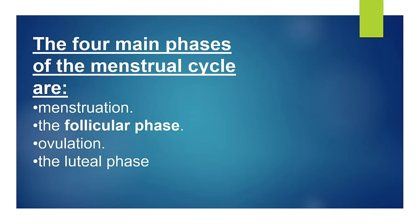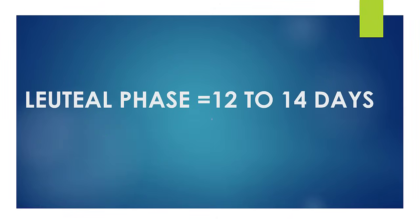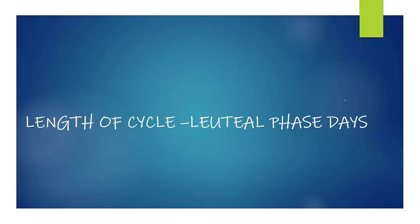The menstrual cycle can be divided into 4 phases: menstruation, the follicular phase, ovulation, and the luteal phase. Just remember the follicular phase is not a constant phase, while the luteal phase is a constant phase of about 12 to 14 days. To calculate the ovulation days, calculate the length of your cycle and subtract the luteal phase — on average 14 days.